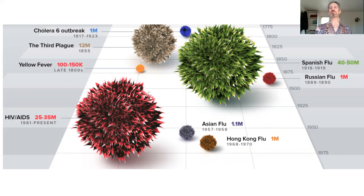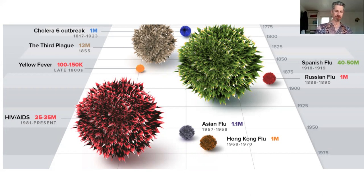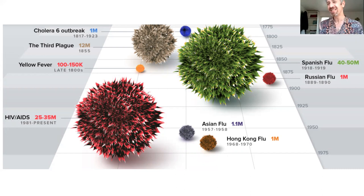Then if you look at the Spanish flu — mistakenly called the Spanish flu because Spain didn't have a wartime censorship regime like the US or Great Britain during World War I, so the news of the disease broke there first. Even though it most definitely did not originate there, it led to 50 million deaths within the span of a year, killing more people than World War I itself.